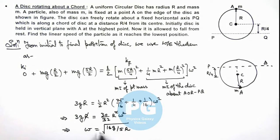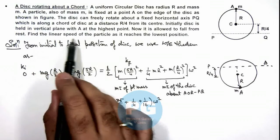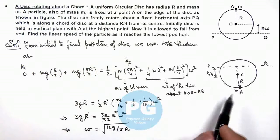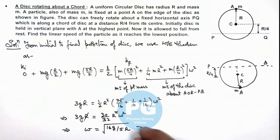And as we have got the angular speed omega, we are required to finally find the linear speed of particle as it reaches the lowest position. So this gives us velocity of particle A we can write as 5R by 4 times omega, as it is moving in a circle of radius 5R by 4.